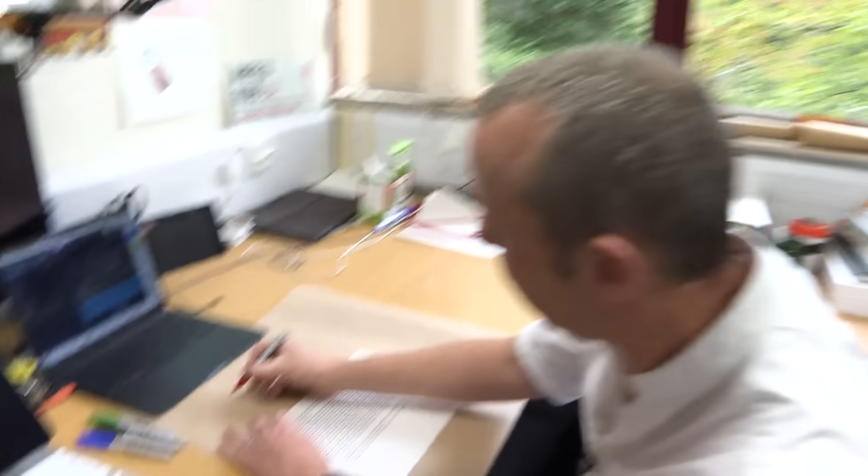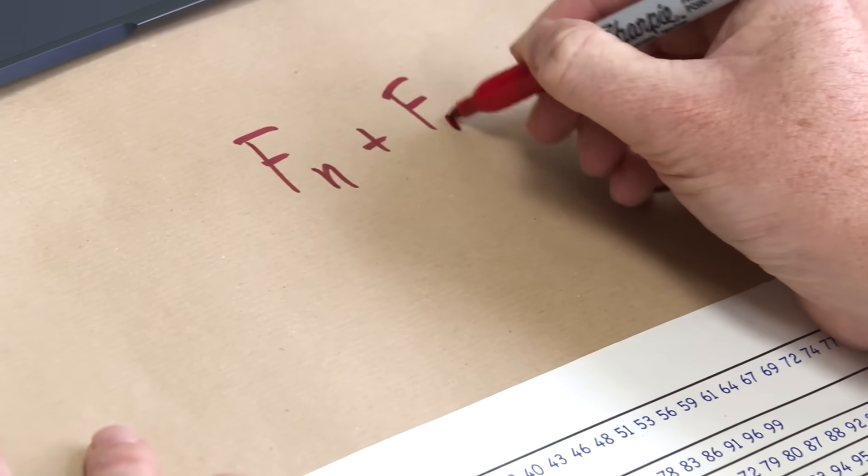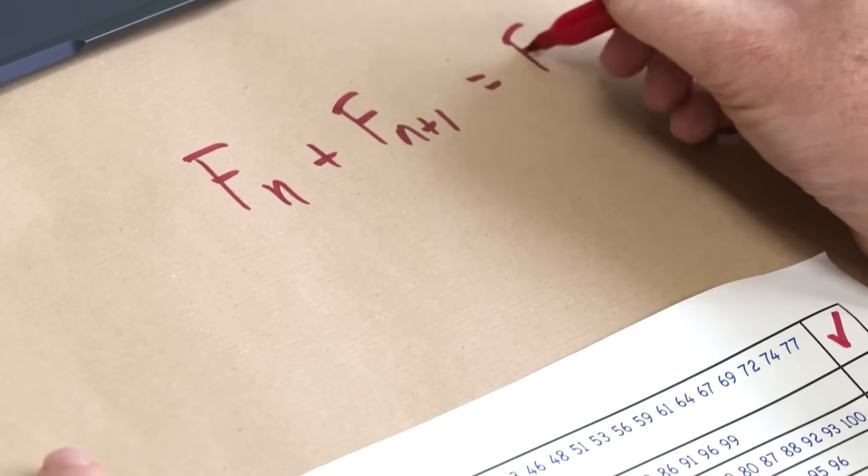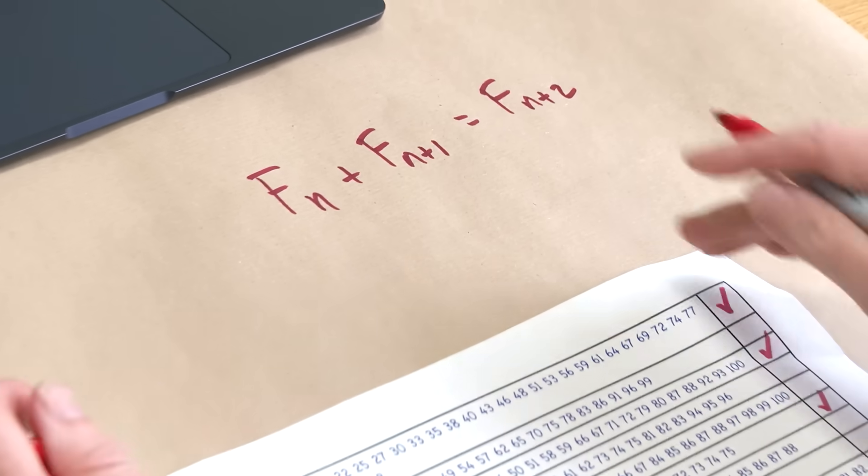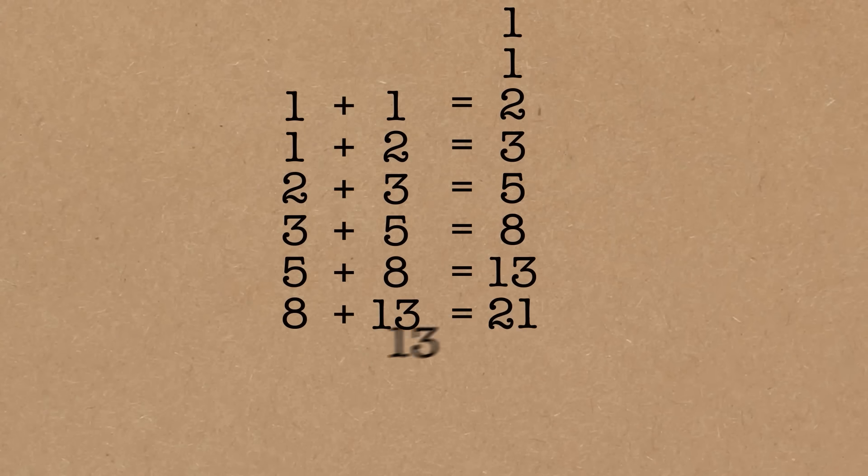So if you want to generate the Fibonacci sequence, you take Fn, add it to Fn plus one, and that will give you Fn plus two, right? Yeah. So for example, you've done videos about this, you don't need to go through this again. Yeah. One, one, two, three, five, eight. Yeah, exactly.